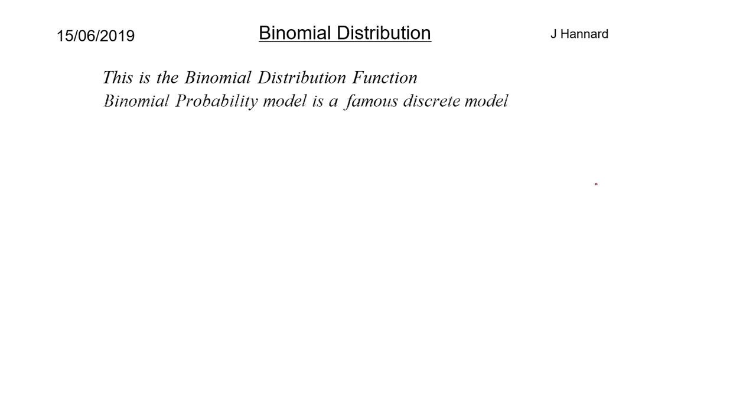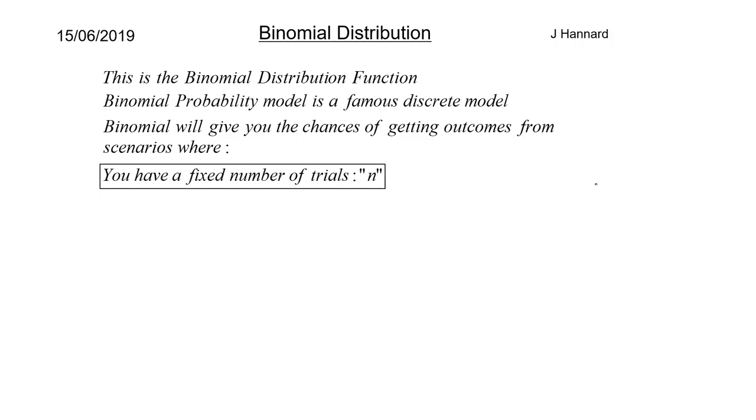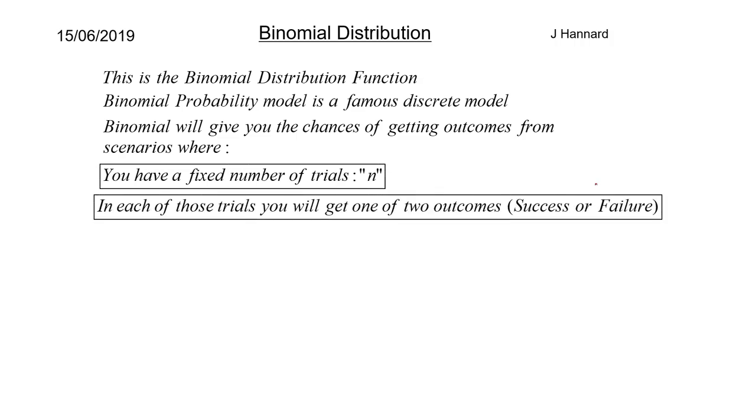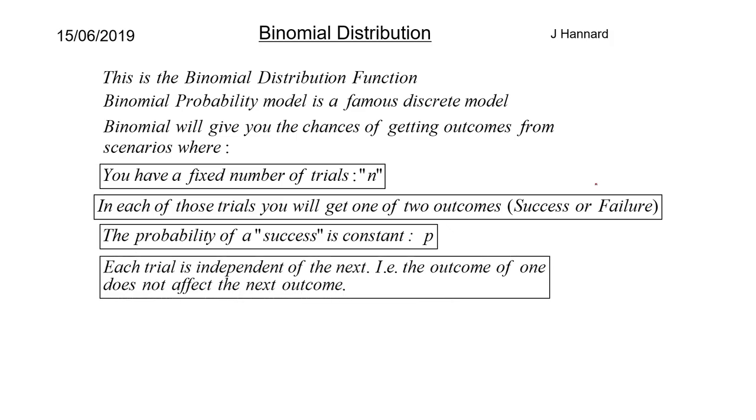So this is the binomial distribution function. Binomial probability model is a very famous discrete model in statistics and mathematics in general. It will give you the chances of getting outcomes from scenarios where you've got a fixed number of trials, the number of questions. In each of those trials you will get one of two outcomes, success or failure. In that particular example you are either right or wrong with a question and the probability of a success is constant. So every time you answer the question you have a one in four chance of getting it right. Each trial is also independent of the next, i.e. the outcome of one does not affect the other. So we imagine that these ten questions were completely different. It didn't matter what you did on one question as to whether you got the next question. They are just ten completely random questions, they are independent.